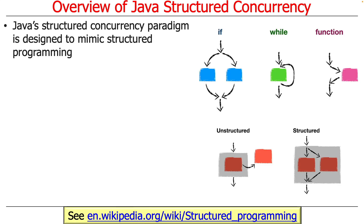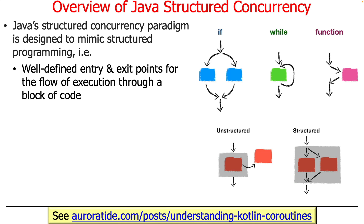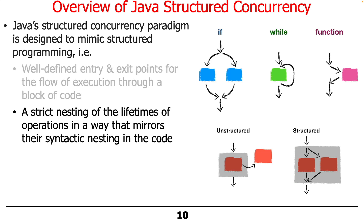Java's Structured Concurrency paradigm is intentionally designed to mimic concepts of structured programming. Back in the 60s, 70s, and early 80s, structured programming was a reaction to unstructured programming — gotos and code smeared around your address space, which made it next to impossible to understand. The idea was to have well-defined entry and exit points for the flow of execution through blocks of code: if statements, while loops, for loops, and functions with well-defined entry and exit points. The idea behind Structured Concurrency is much the same — you want a nesting of lifetimes of operations that mirrors their syntactic nesting in the code, so semantics and syntax harmonize with each other.